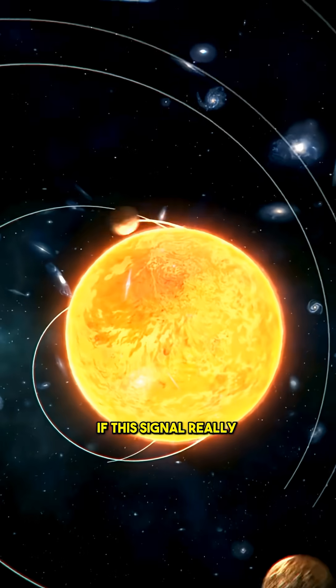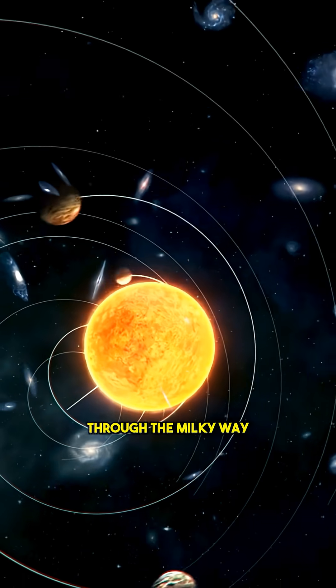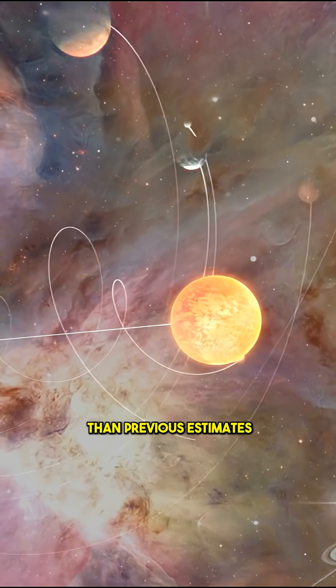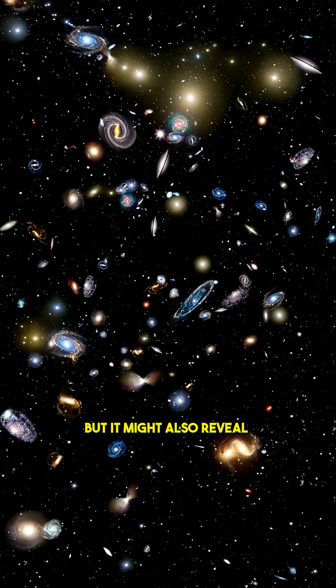What does that mean for us? If this signal really reflects our motion through the Milky Way, then the solar system may be traveling nearly four times faster than previous estimates.